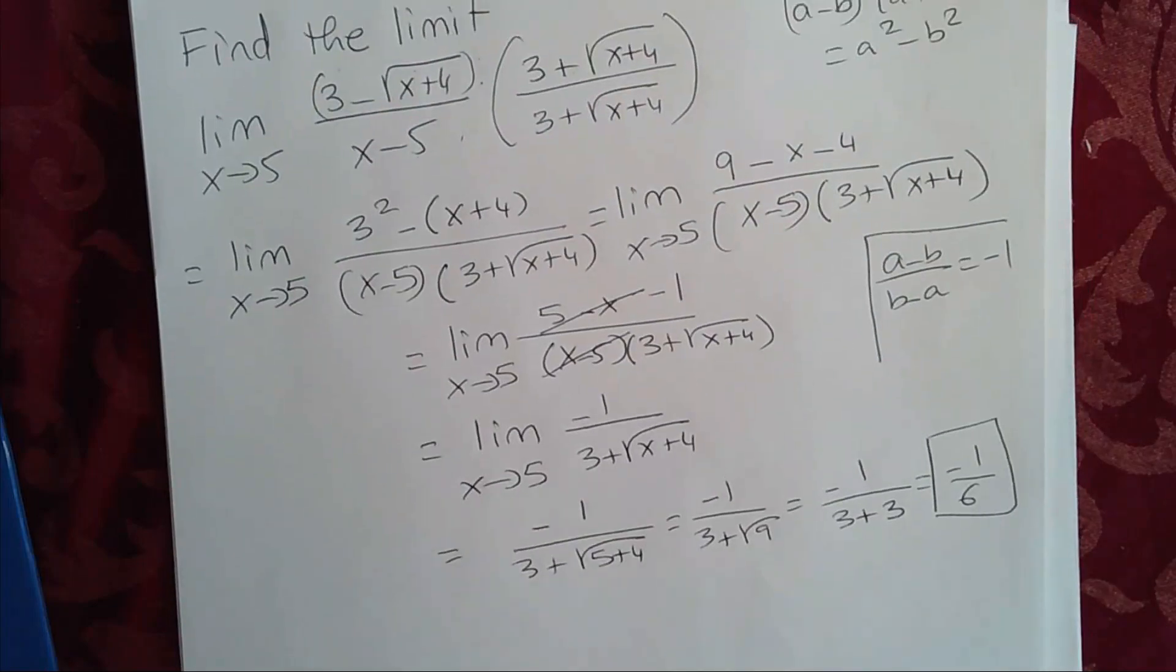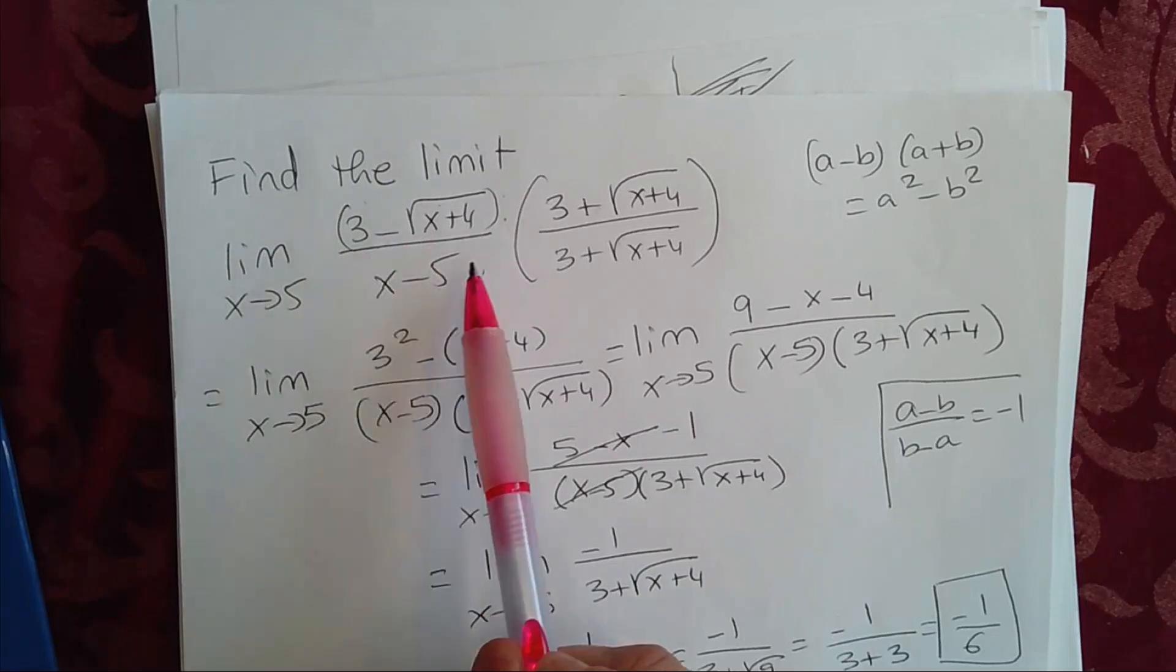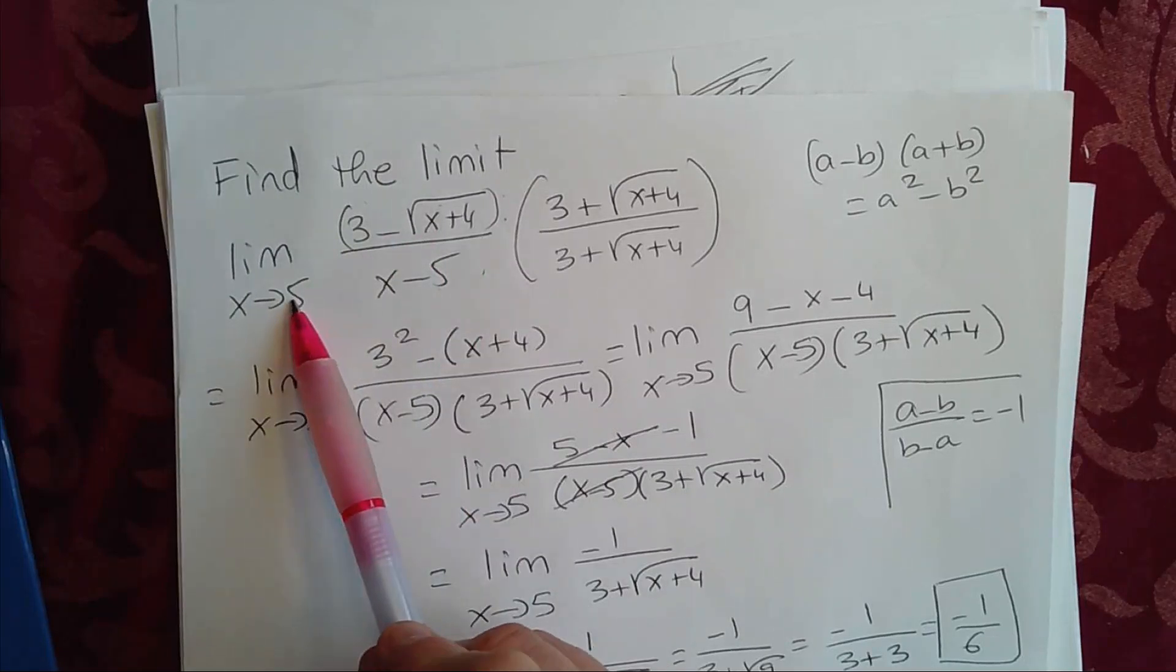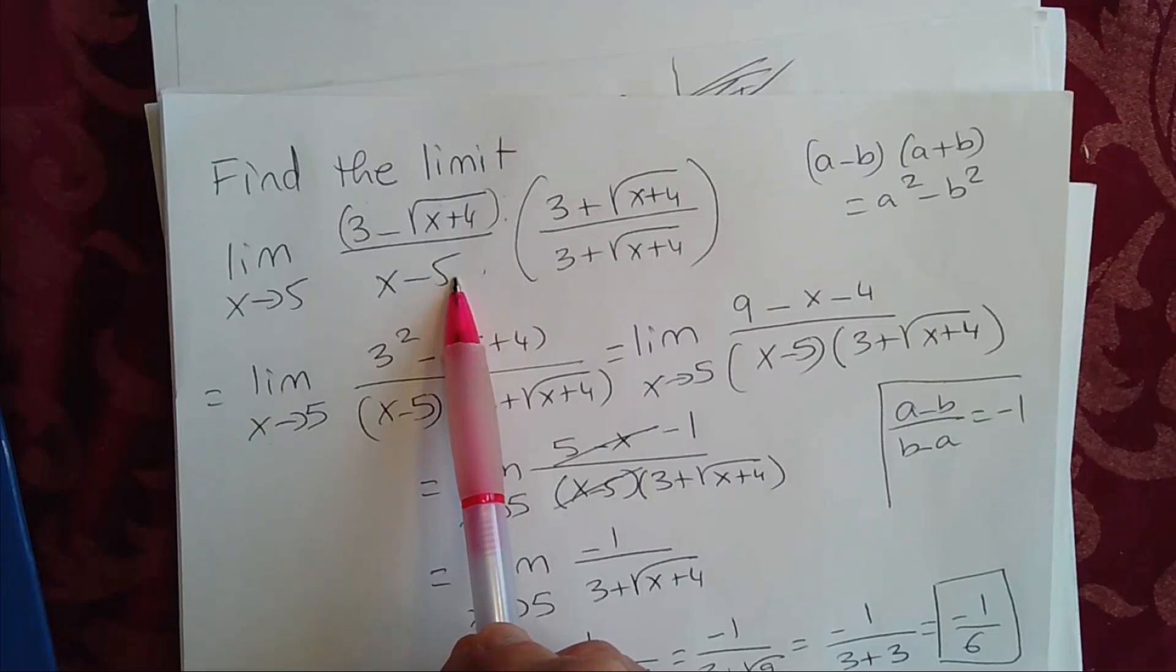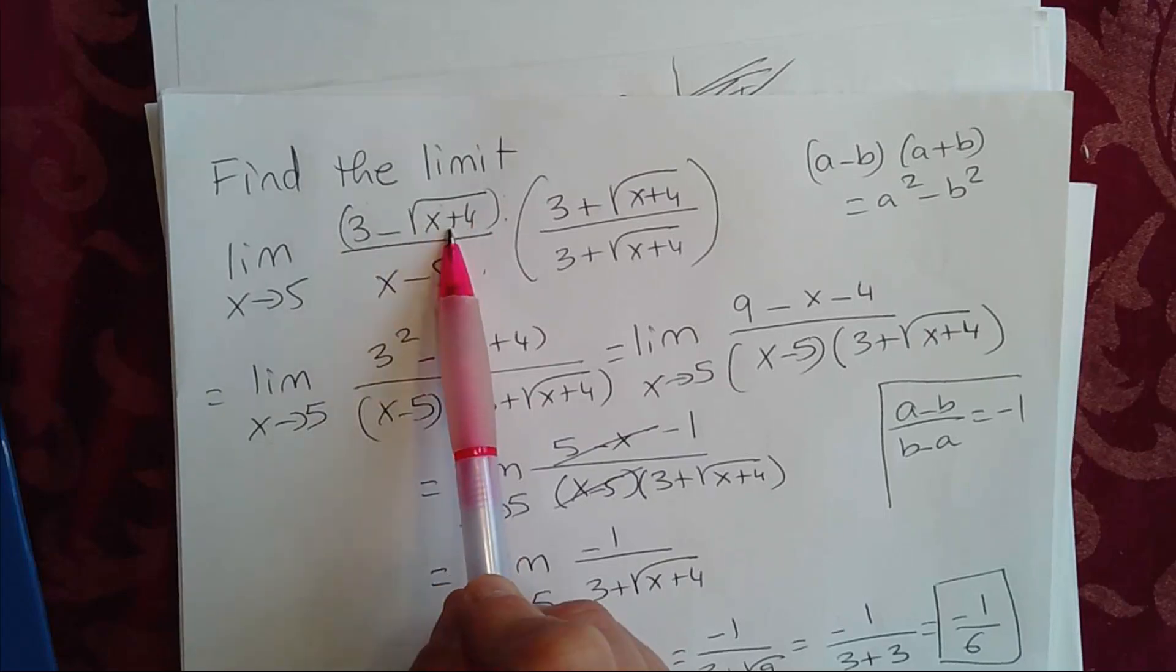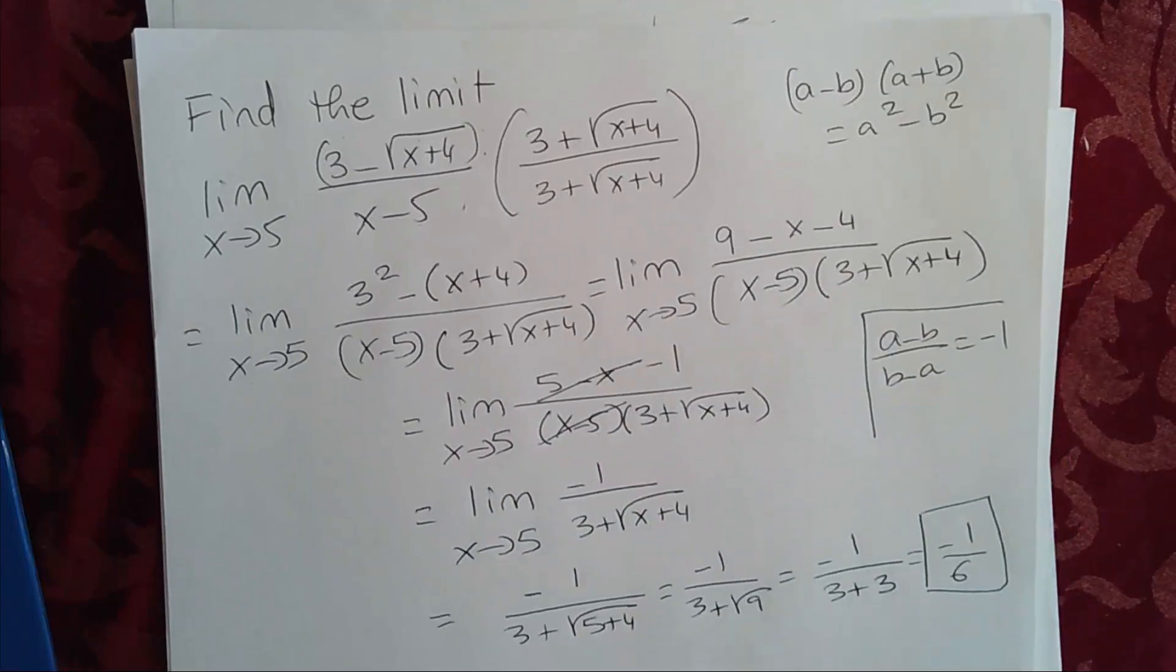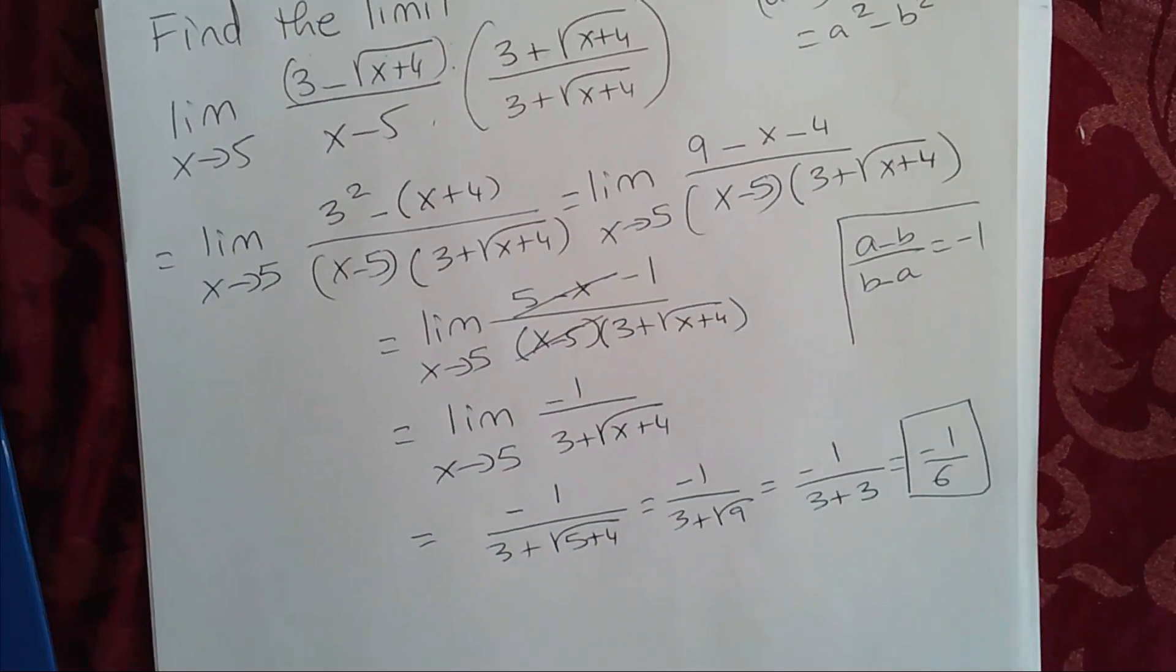By the way, what you could have done also, you could have used L'Hôpital's rule, because if you plug in 5, 5 minus 5, you get a 0 in the denominator. And if you plug in 5 also in the numerator, you get 5 plus 4, which is 9, square root of 9 is 3. 3 minus 3, that's 0 over 0. You could have used L'Hôpital's rule, though it might be a little overkill here. But either way, you could find the limit.